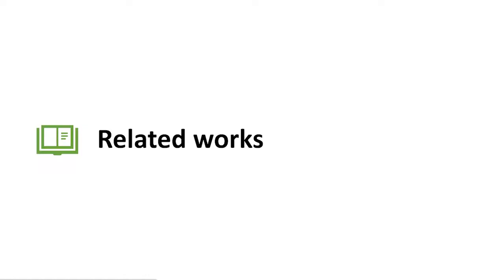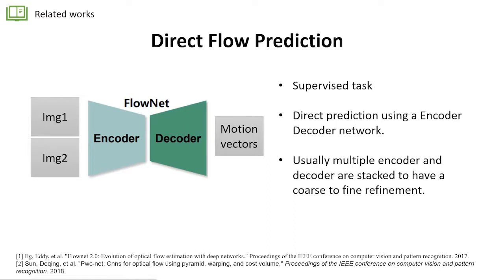Let's review some related works. Before the deep learning era, Optical Flow was treated as an energy minimization problem, which is off-topic and I will not cover it here. But with the representation power of deep neural networks and the emergence of synthetic datasets, we can treat this as a supervised task. The most straightforward idea is to directly predict a flow using an encoder-decoder neural network based on the paired input images. But the direct outputs of the decoder can sometimes be of low quality, so usually multiple encoder-decoder pairs are stacked to have a coarse-to-fine refinement of the Optical Flow.